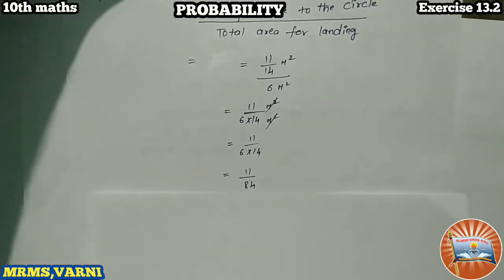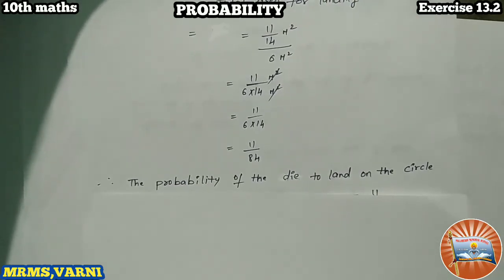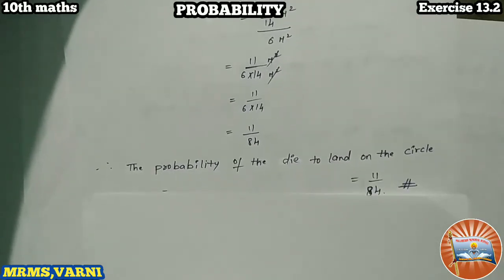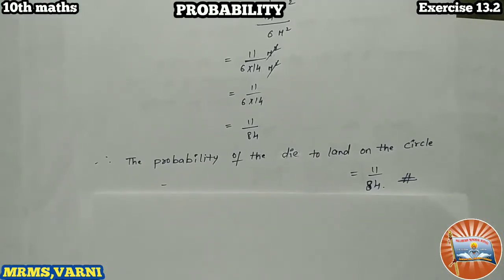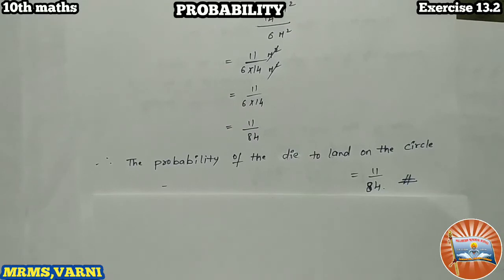Let us write here: the probability of the die to land on the circle equals 11 by 84. Is it clear? Yes. I hope you understand this problem. Thank you.